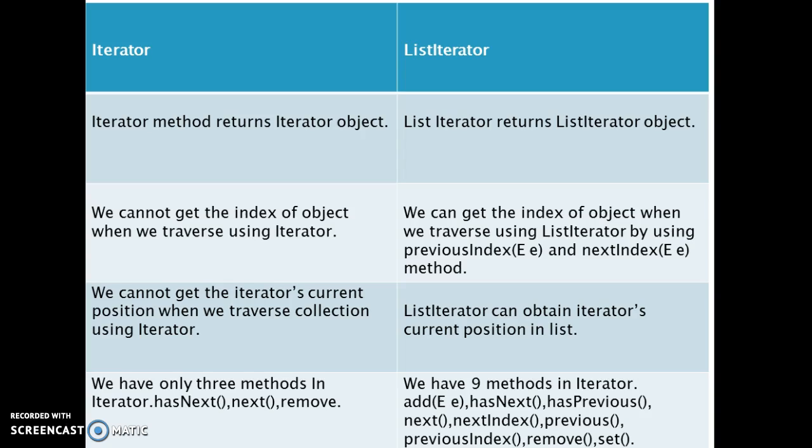Next, we cannot get the iterator's current position when we traverse a collection using iterator. However, list iterator can obtain the iterator's current position in the list.